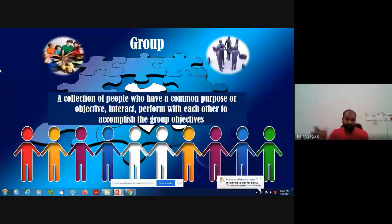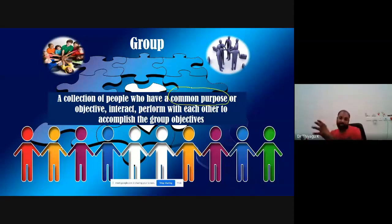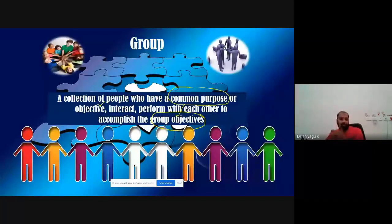So in this case, a group is a collection of people who have a common purpose. In the case of MBA students, you have the common purpose to finish the MBA with first class or distinction. You also have other objectives and interact with each other to accomplish group objectives. Whenever a group work is assigned, there is some kind of goal — once you work toward reaching that goal together, that is called a group.